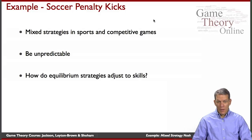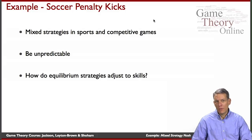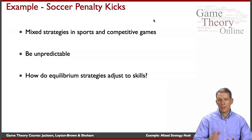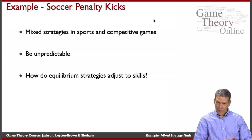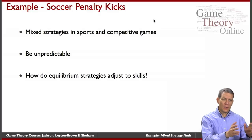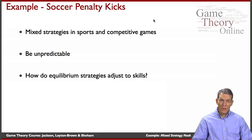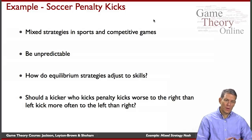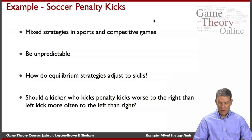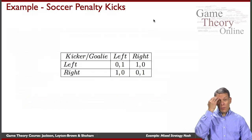So how is the equilibrium going to adjust to the skills of the players? Suppose as a kicker I might be biased — more accurate in one direction than the other. If you ask me to kick towards the left side of the goal, I might be very accurate; if I have to kick towards the right, I'm less accurate and have a higher chance of missing altogether. So should a kicker who kicks worse to the right than the left kick more often to the left?